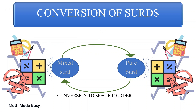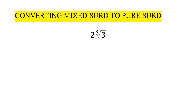In this video we will look at conversion of surds from a mixed surd to a pure surd, and from a pure surd to a mixed surd, and also how to convert a surd to a specific order. A mixed surd is one where we have a coefficient before the irrational part. For example, 2 times the cube root of 3 — here the rational coefficient 2 is in front of the irrational part, so this is called a mixed surd.